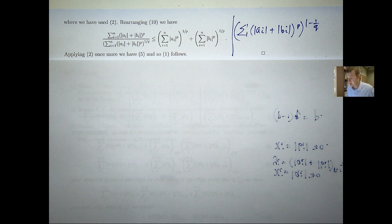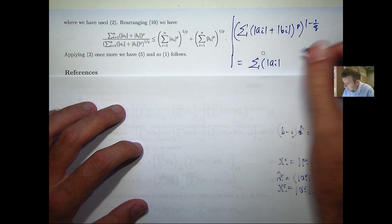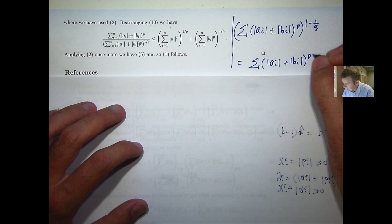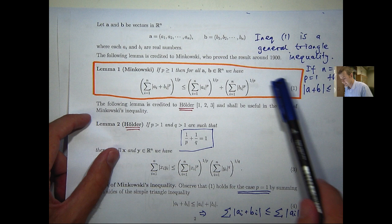So the left-hand side then, in this inequality, is just the following. So what we've done is we have shown inequality 5 holds and therefore Minkowski's inequality must also hold.